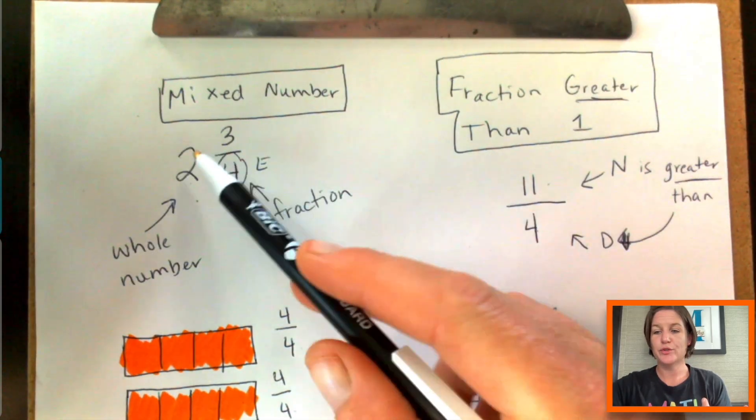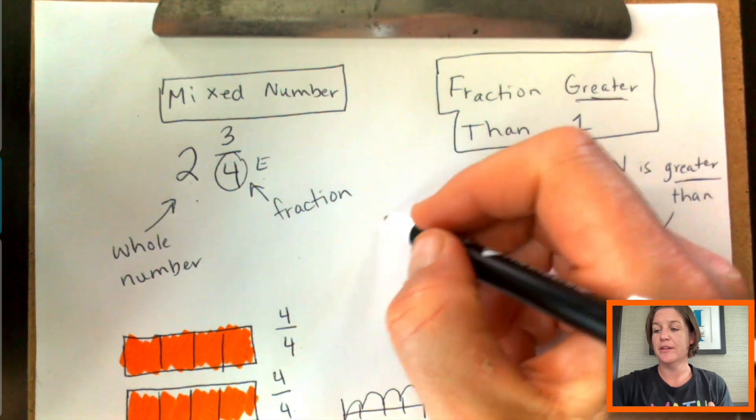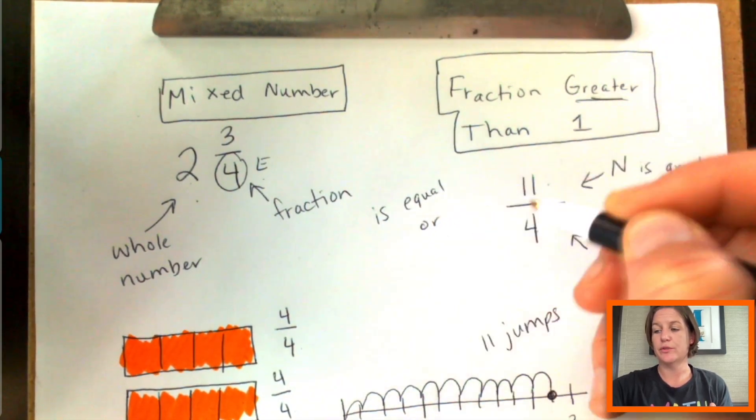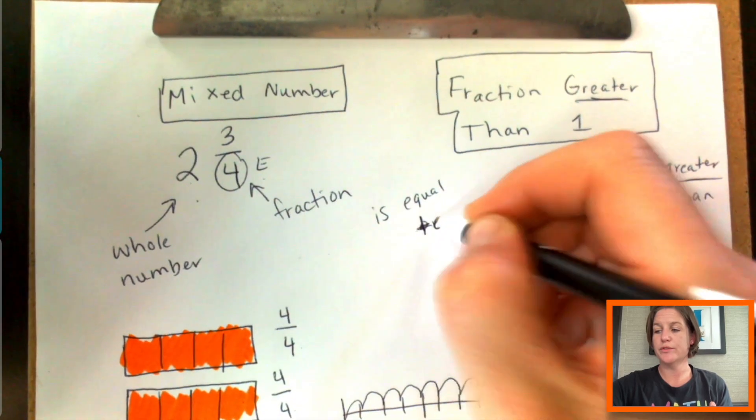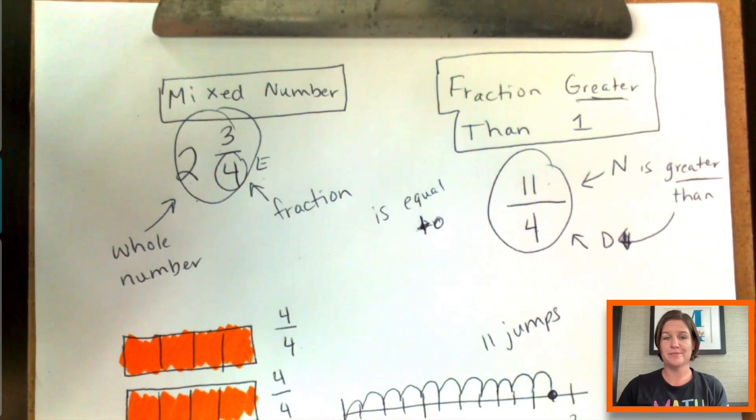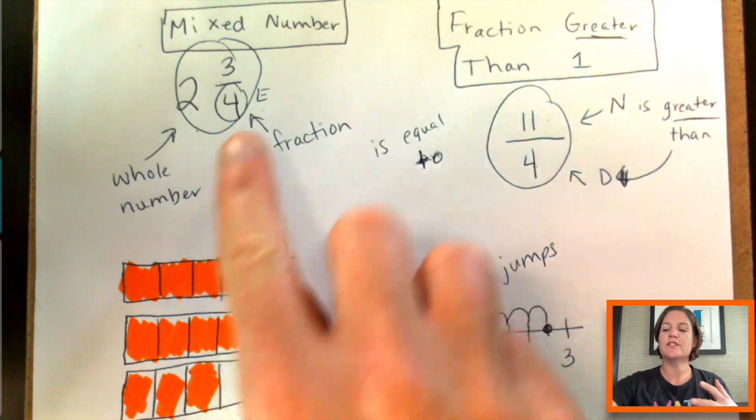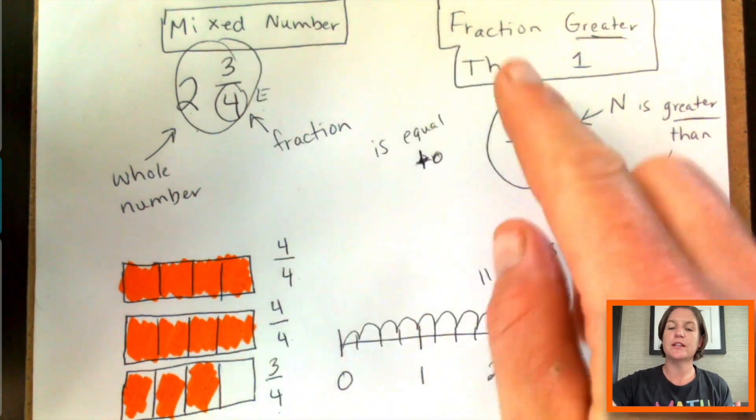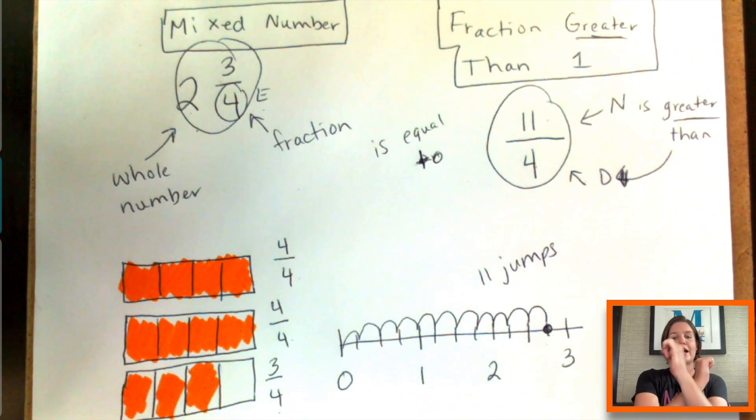So really, two and three fourths is equal, or equivalent to, eleven fourths. Now some of you might be thinking, oh I could just do four times two, which is eight, plus three, which is eleven. I call that the multiply then add swoop. But you know what? I don't teach that in third grade.